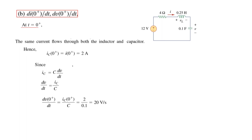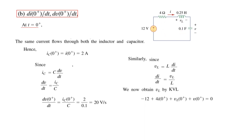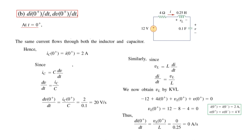To find di/dt we use vL = L·di/dt, so di/dt = vL/L, and we need the voltage vL. Writing the KVL equation around the loop: −12 + 4i + vL + v = 0. Plugging in i(0+) = 2 amperes and v(0+) = 4 volts: vL(0+) = 12 − 8 − 4 = 0 volts. Therefore di/dt at t=0+ equals vL(0+)/L = 0/L = 0 amperes per second.